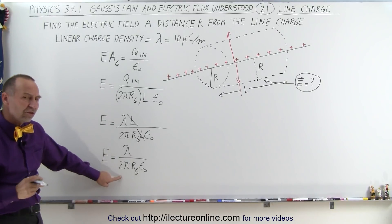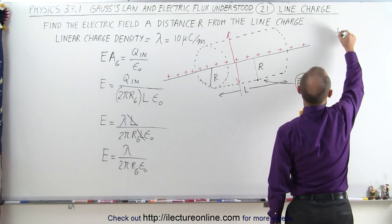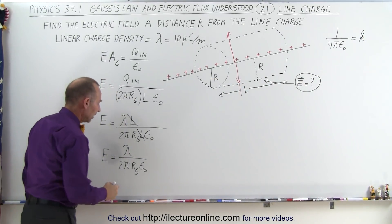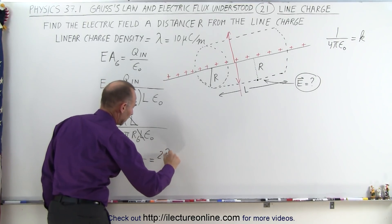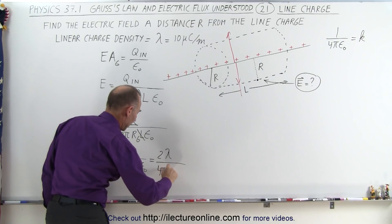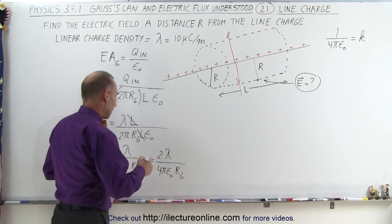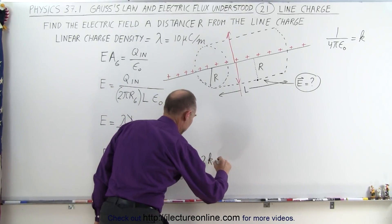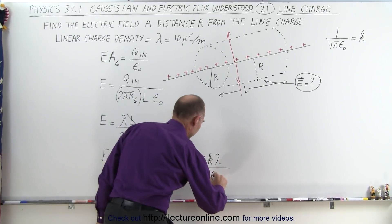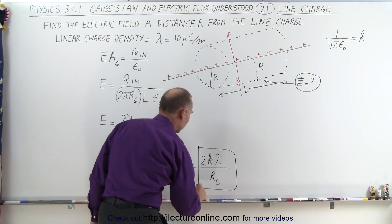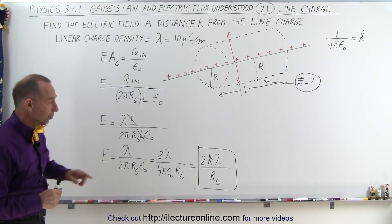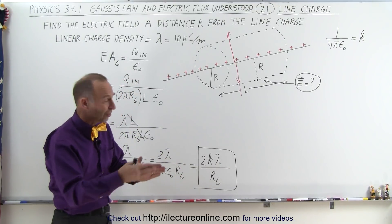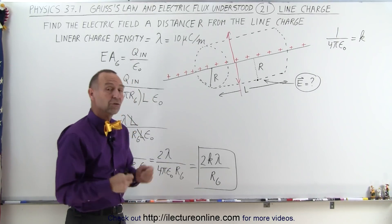Since 2π·epsilon sub nought is related to 4π·epsilon sub nought, and since 1 over 4π·epsilon sub nought equals k, we can multiply top and bottom by 2 to write this as 2k·lambda divided by r. This is the magnitude of the electric field for an infinitely long line charge. It only depends on how far you are from the line — it's proportional to 1 over the distance, so doubling the distance halves the electric field.